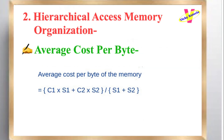Average cost per byte: Average cost per byte of the memory equals (C1 × S1 + C2 × S2) / (S1 + S2).